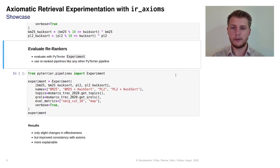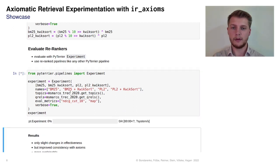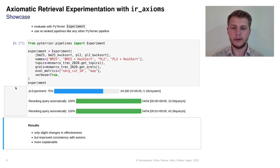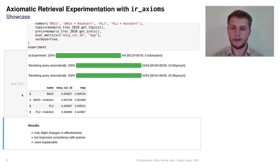We now evaluate the re-rankers and the baseline rankers using PyTerrier's experiment helper, just as we would do with any other PyTerrier retrieval pipeline. Because we are using a combination of four axioms, the re-ranking might take some time. The results in this example indicate that re-ranking with a majority vote of multiple axioms often only slightly changes the system's effectiveness. But it improves the consistency with axioms and makes the retrieval system more explainable.